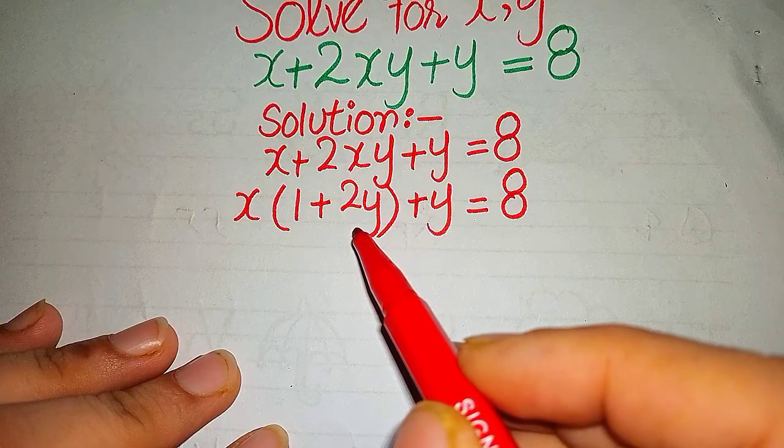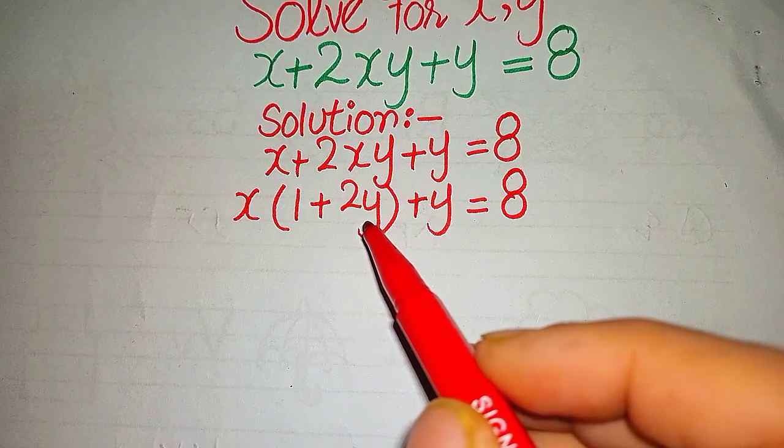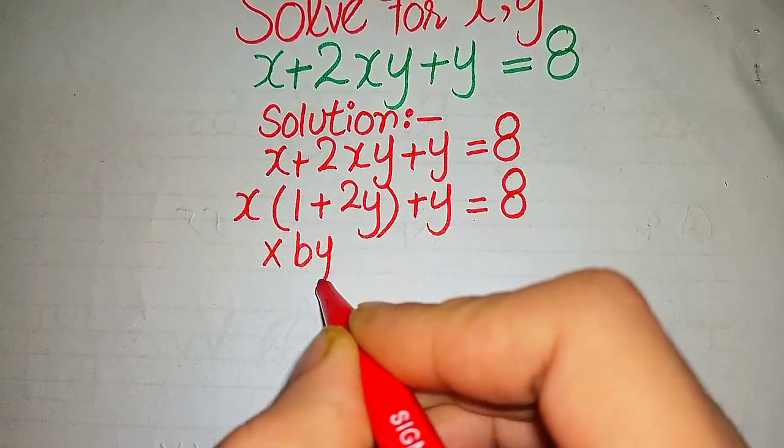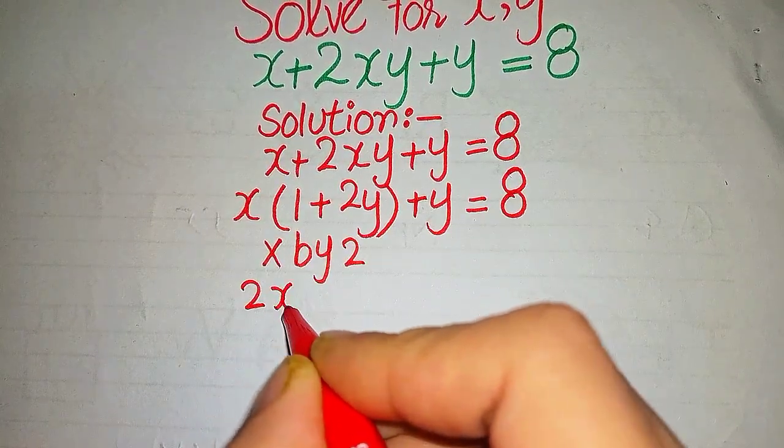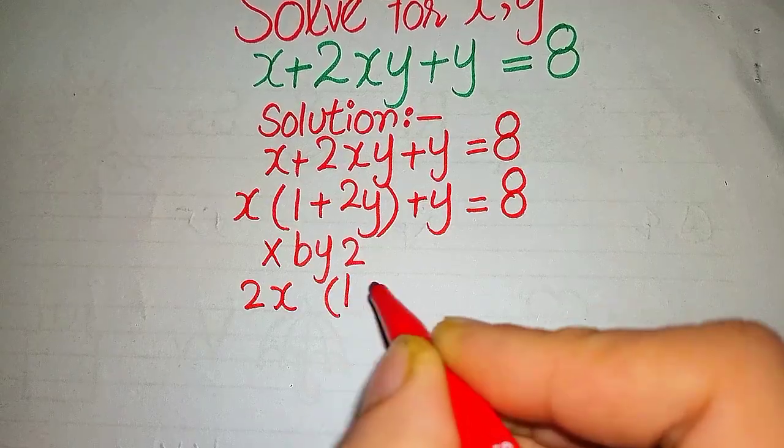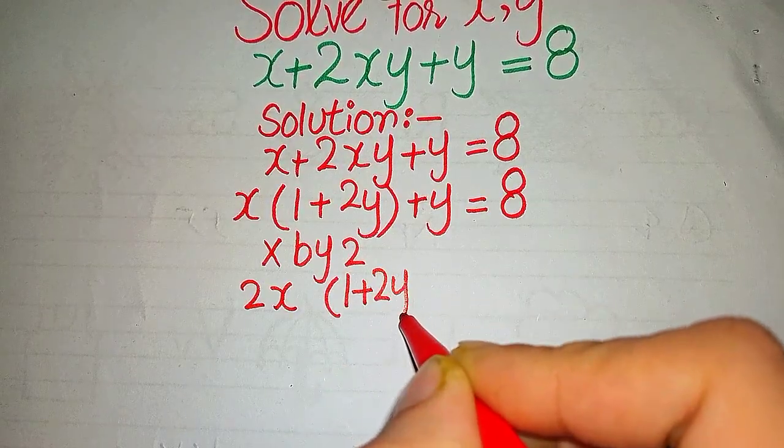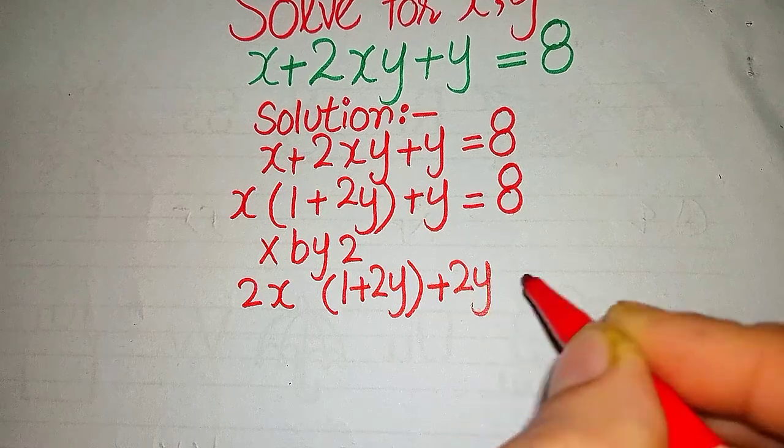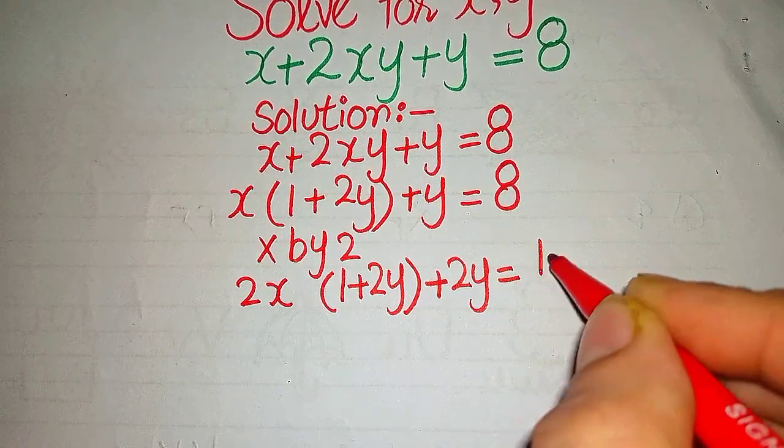Such as 2x(1 + 2y) + 2y = 16. Similarly, we can see that here is 2x(1 + 2y), 2y, and 16.